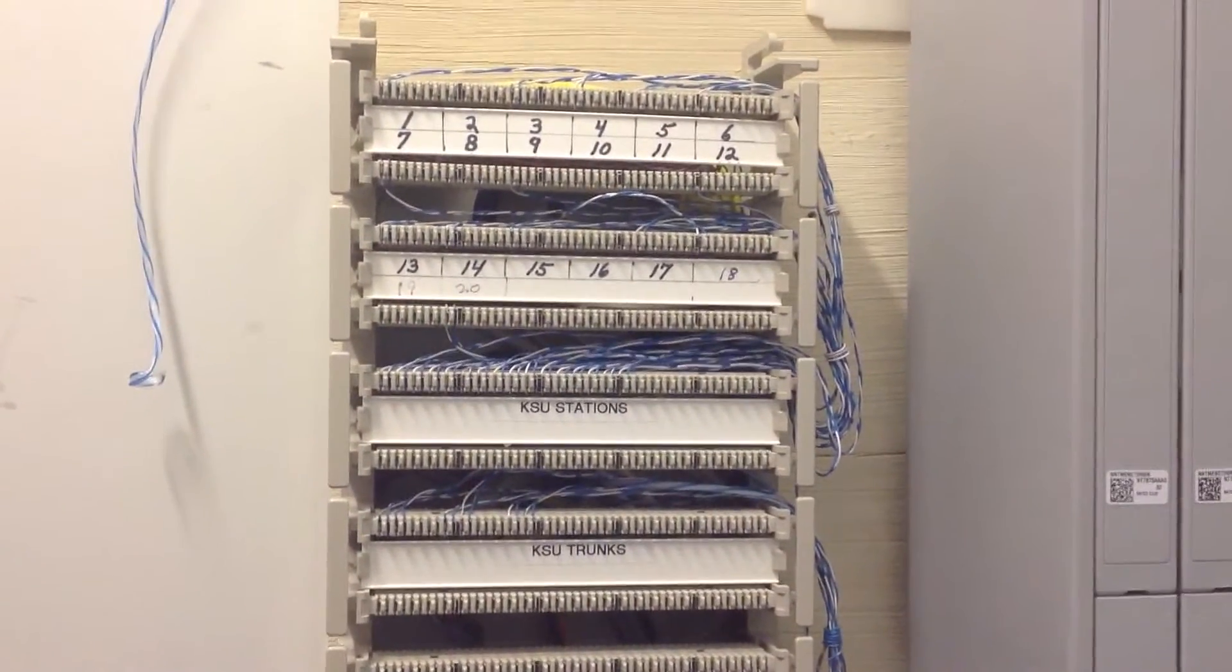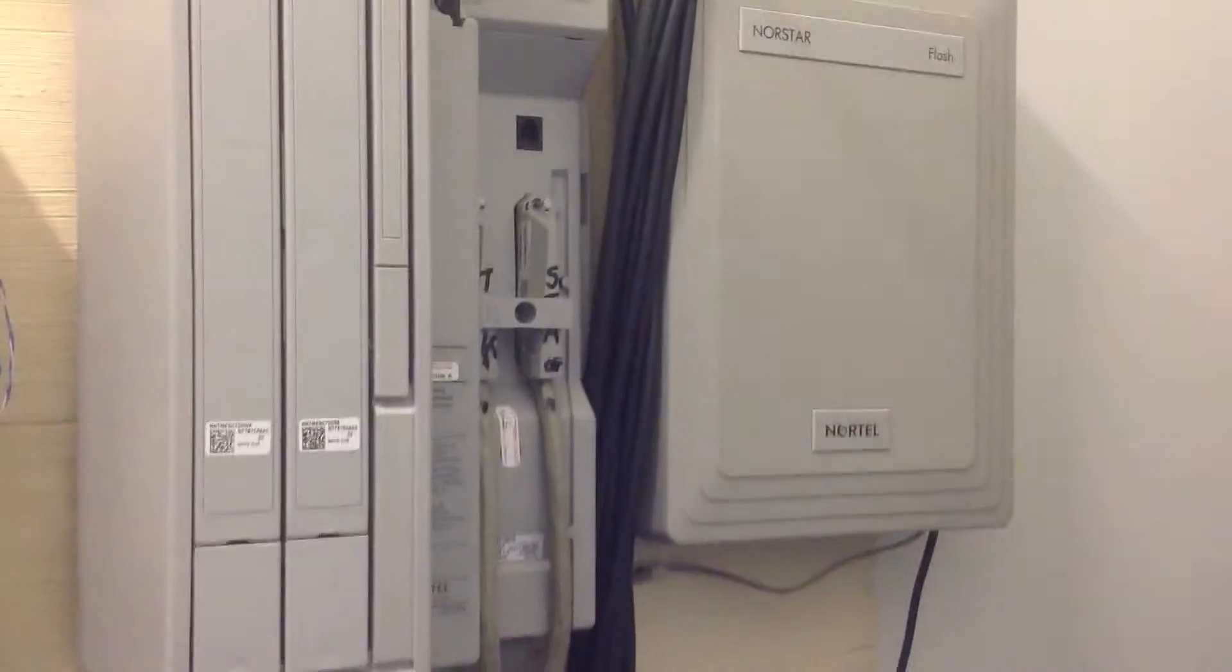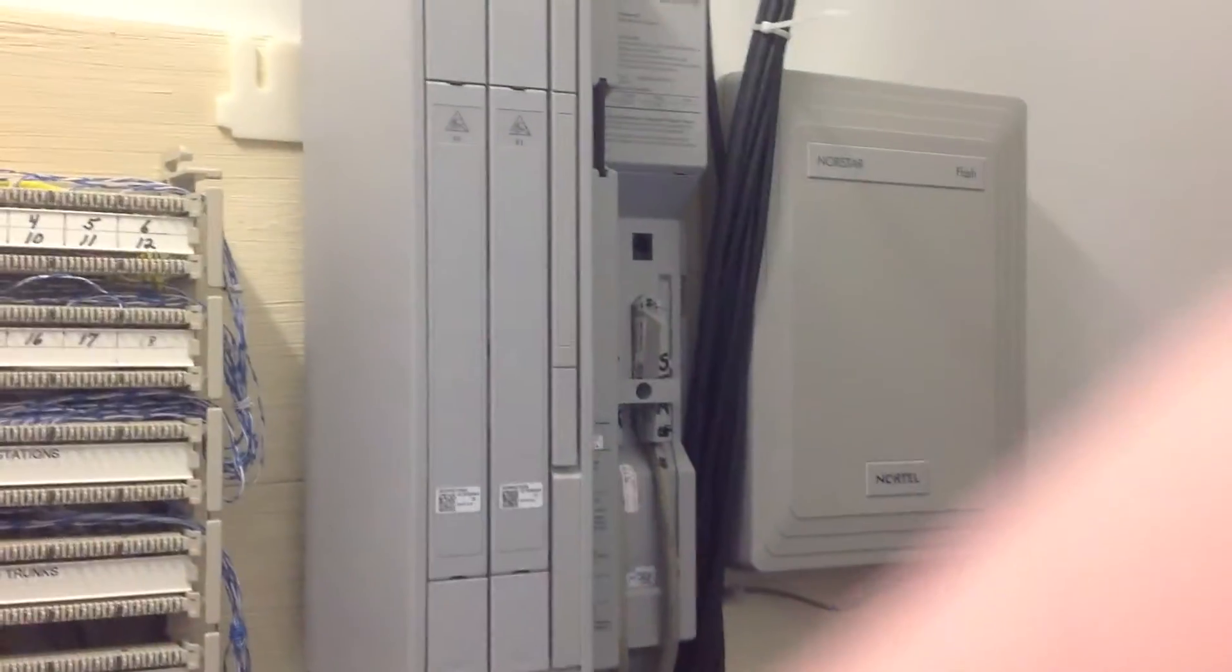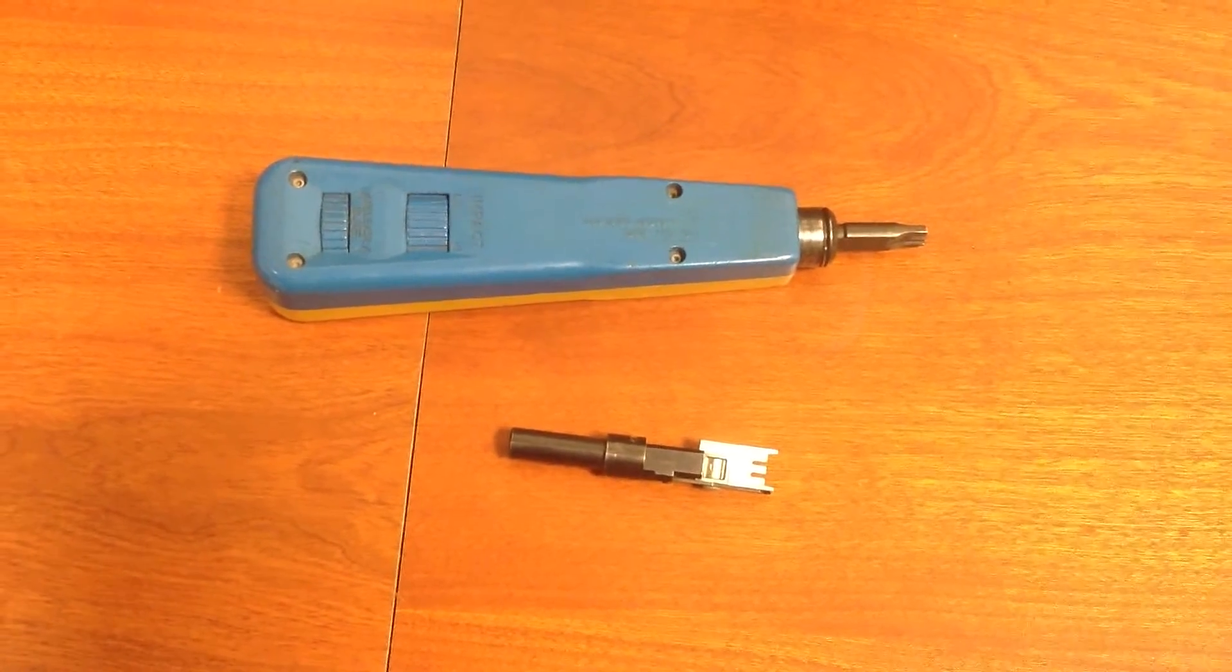This is a BIX block. So see it comes off of this compact ICS, down through the little tails there, comes over to here.